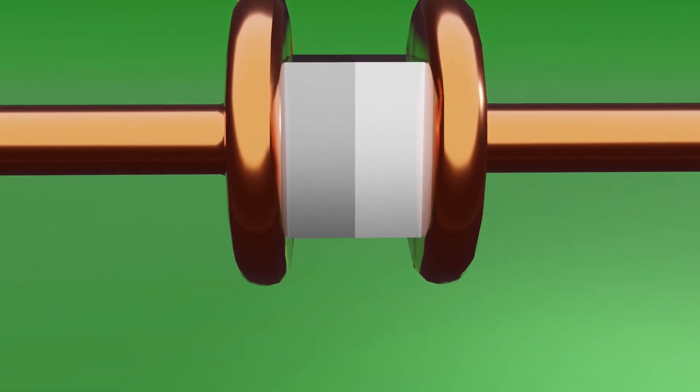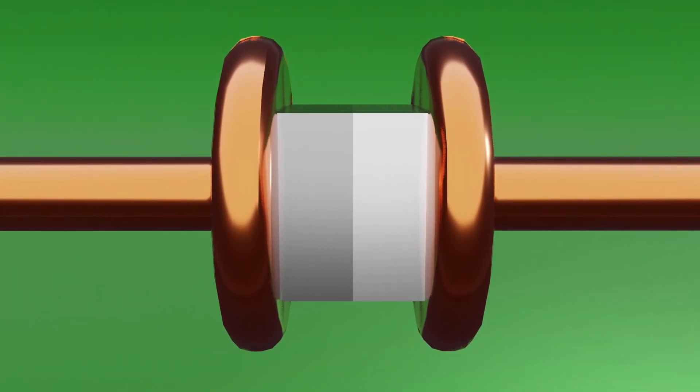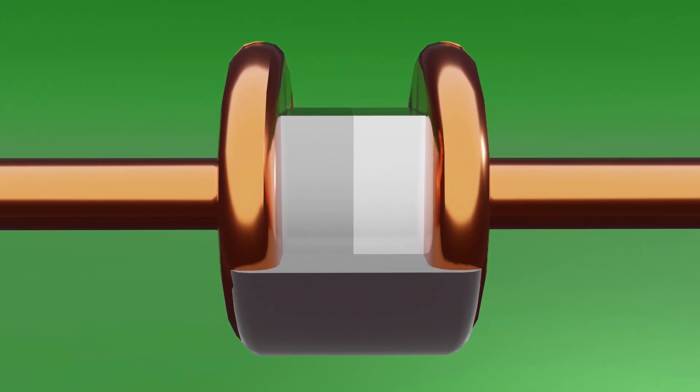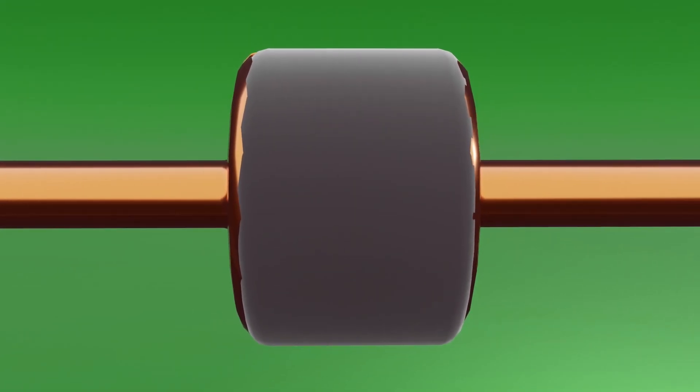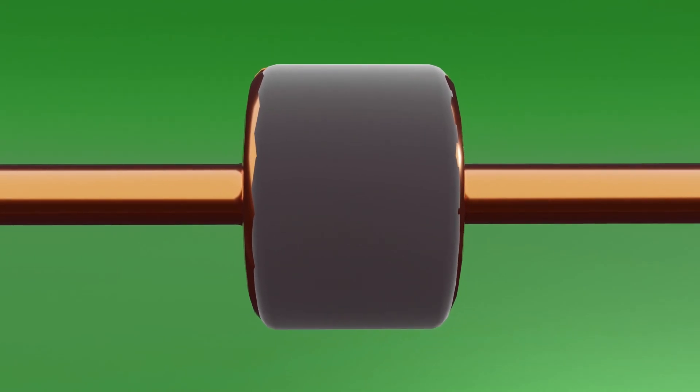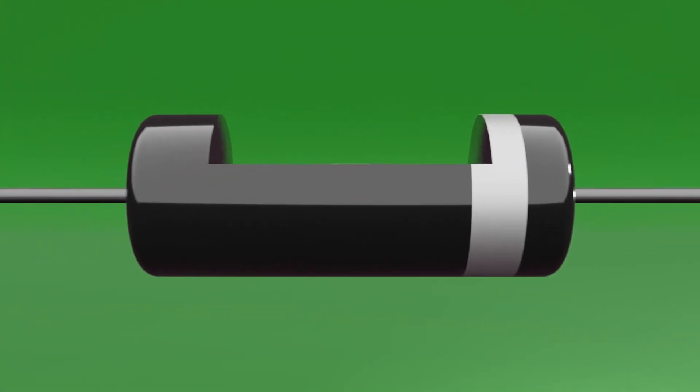In theory, only with these components our diode should work. But to have a really functional product, a layer of insulation is added over the components to prevent them from making undue contact, and also a harder layer to protect the whole system from mechanical wear.